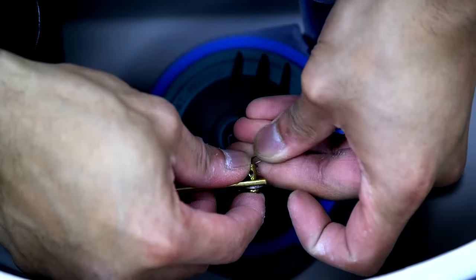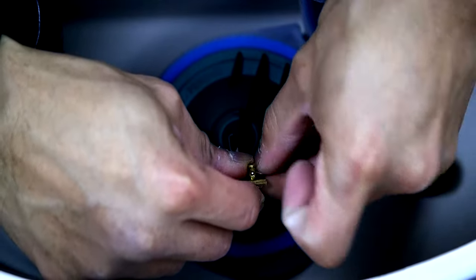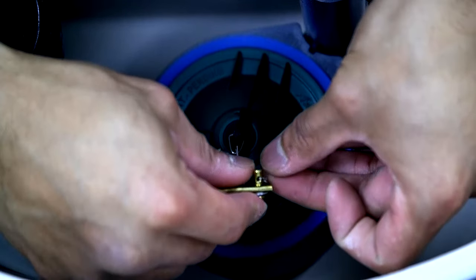Lastly, insert the cotter pin in the hole of the clevis pin. It should snap back into place if done right.